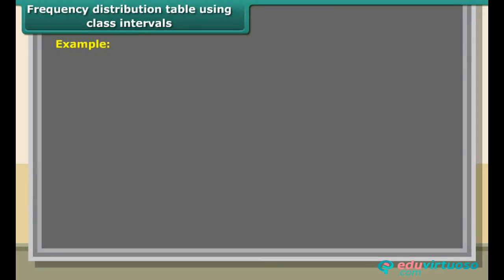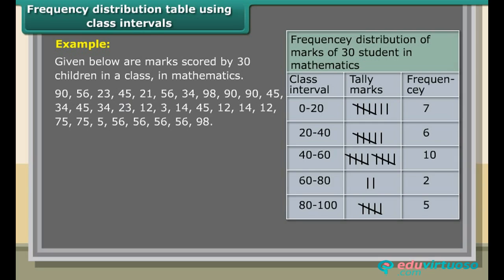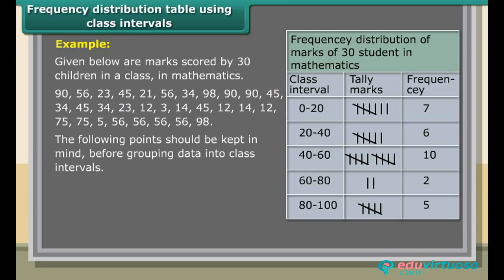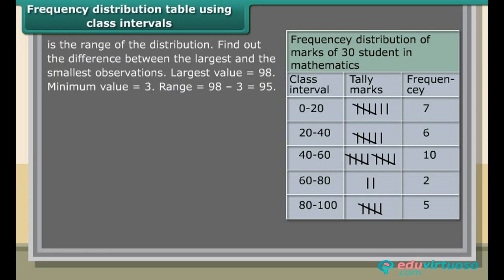Frequency distribution table using class intervals: Given below are marks scored by 30 children in a class in mathematics. Before grouping data into class intervals, find the range of the distribution — the difference between the largest and smallest observations. The largest value is 98, the minimum value is 3, so the range is 98 minus 3, which equals 95.